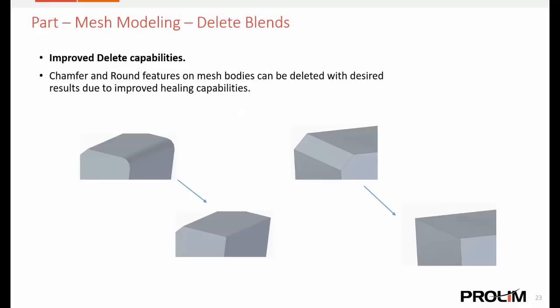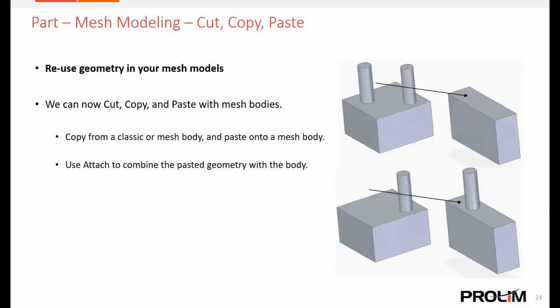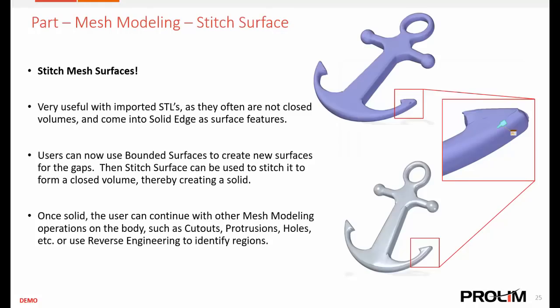There are also capabilities to delete parts of mesh bodies — we can delete rounds or chamfers. We can also reuse geometry: cut, copy, and paste now work with mesh bodies, so we can cut or copy a feature and place it somewhere else. We can even stitch mesh surfaces — useful on imported files where there are little holes or artifacts to close up. We can use the bounded surface command to close up those surfaces and potentially create a solid model.